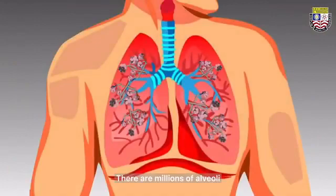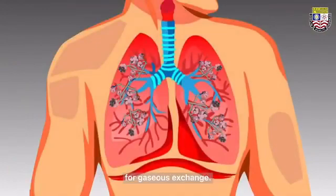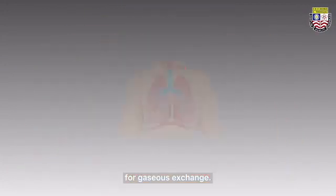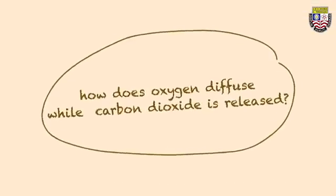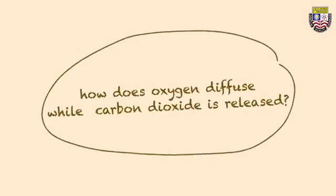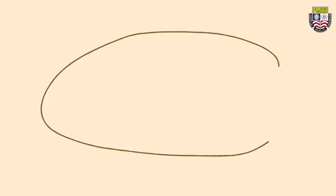There are millions of alveoli to provide a large surface area for gaseous exchange. So how does oxygen diffuse while carbon dioxide is released? Let's go deeper.